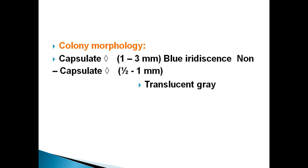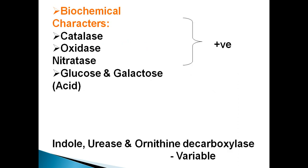Colony morphology: capsulated strains have a diameter of 1–3 mm. Some non-capsulated strains have a diameter of half to 1 mm, forming translucent colonies. Biochemical characteristics: catalase positive, oxidase positive, nitrate positive, and they ferment glucose and galactose.